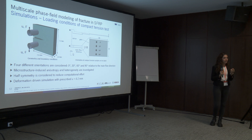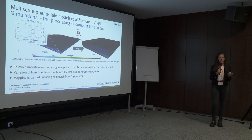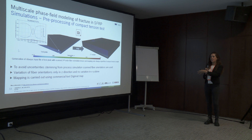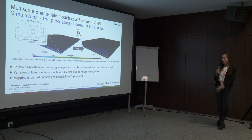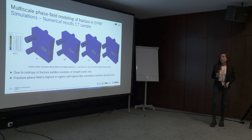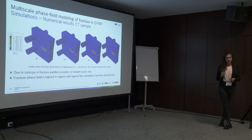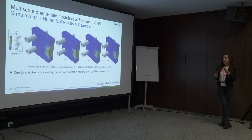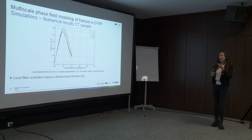Experiments are made for samples with fiber alignments of 0°, 30°, 60°, and 90° with respect to the load. These samples are manufactured from a plate, so to capture the real orientation we map the fiber orientation tensor from the plate to the CT sample mesh using Digimat. To promote computational efficiency, we use symmetry and compute only half the CT sample. Due to isotropy in fracture, crack evolution is straight, and the damage field is highest in regions with the highest fiber orientations.